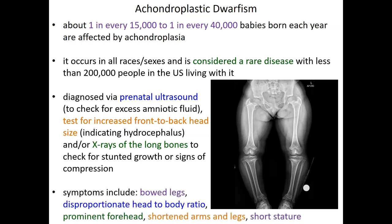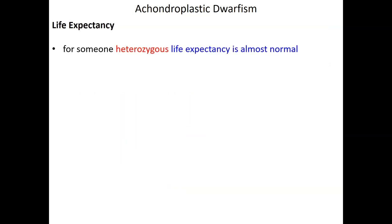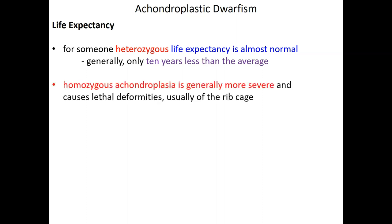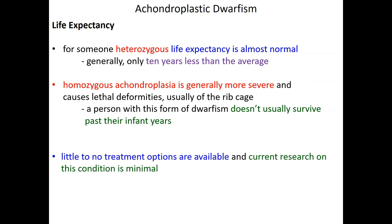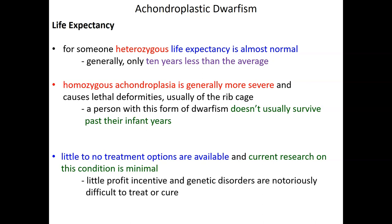Symptoms include bowed legs, disproportionate head-to-body ratio, prominent forehead, shortened arms and legs, and relatively short stature. For heterozygous individuals with one mutant allele, life expectancy is almost normal — only about 10 years less than average. However, individuals homozygous for the mutant allele have a much more severe bone pathology with lethal deformities, usually in the rib cage, and generally don't survive past infancy. There's little to no treatment, largely because it's a rare disease with insufficient profit incentive for pharmaceutical development.